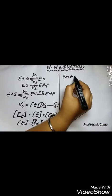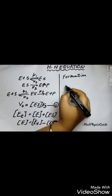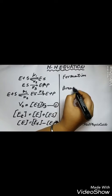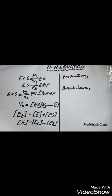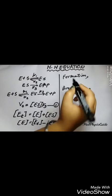From here, we take the concentration of E to one side and the ET and ES to the other. So we get E is equal to ET minus ES.